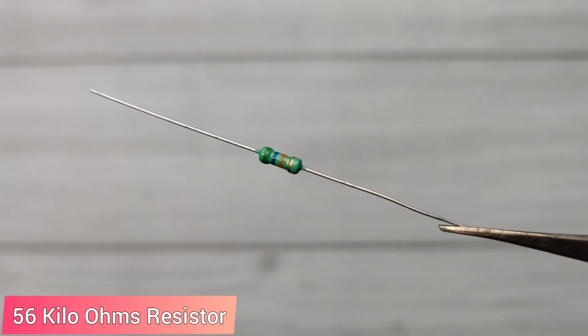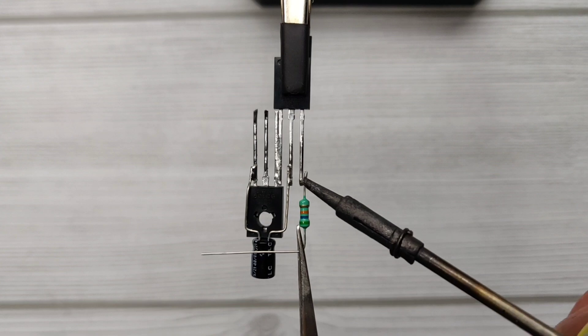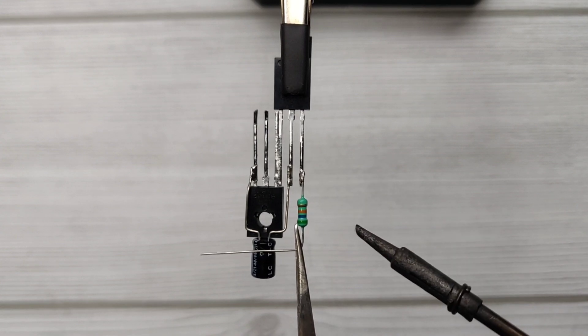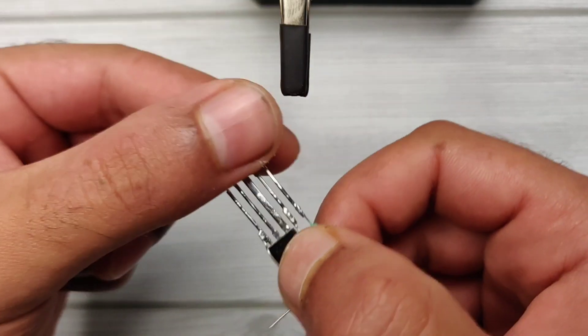Take a 56 kilo-ohm resistor and solder it on the base of transistor. Now turn the circuit upside down.